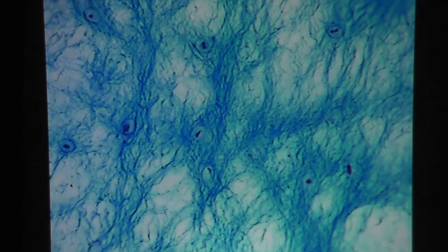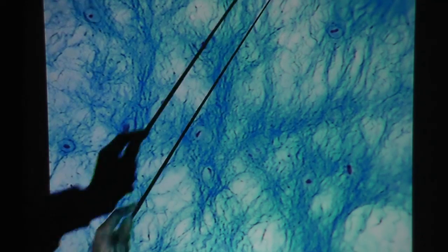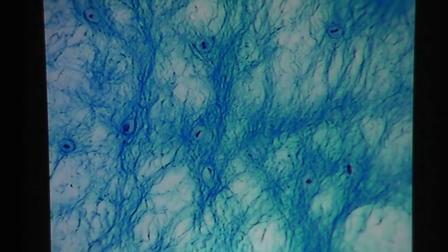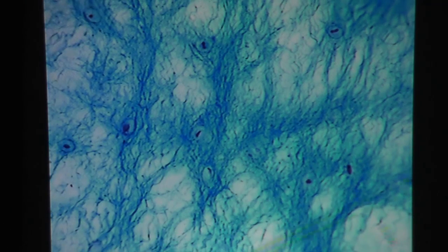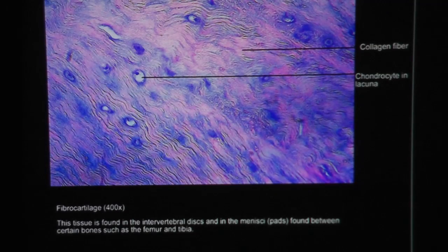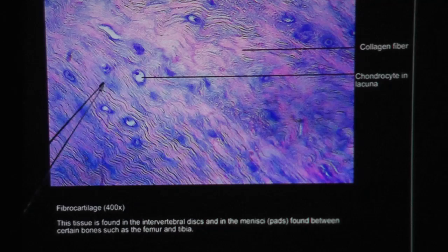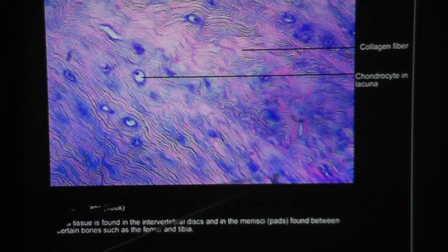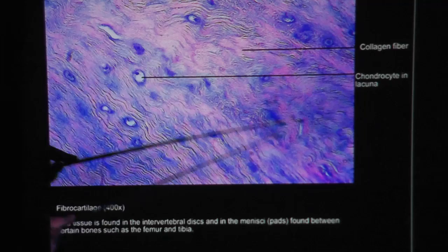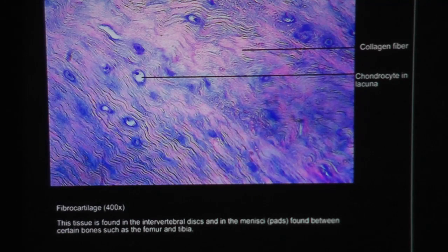One last look: lots of fibers running through the whole screen, tending to run in an up-and-down direction — long fibers. Those would be collagen fibers. And these cells, of course, are chondrocytes in lacuna because it's fibrocartilage. Another look, fibrocartilage magnified 400 times. You should see the fibrocartilage cells in lacuna — chondrocytes in lacuna. In between these chondrocytes we see wavy formations running up and down — those would be the collagen fibers.